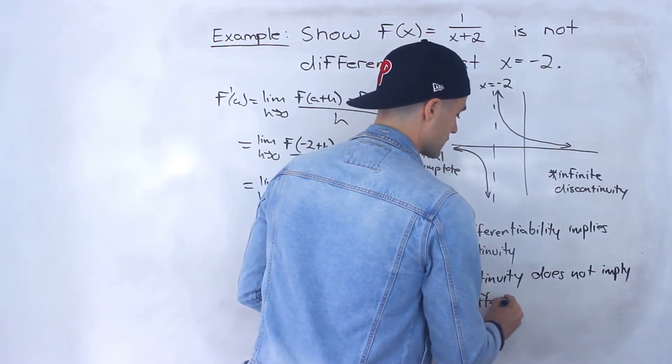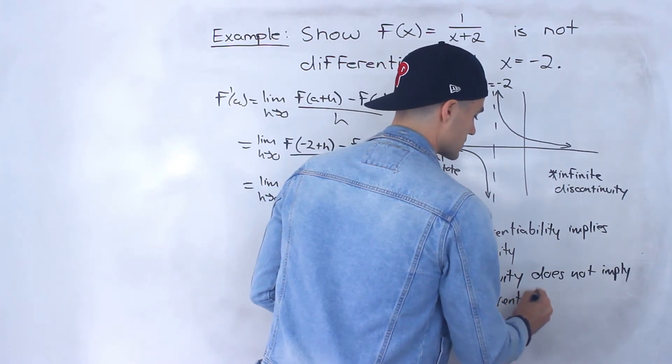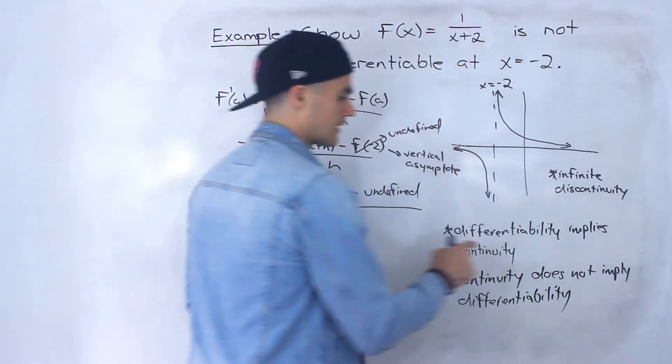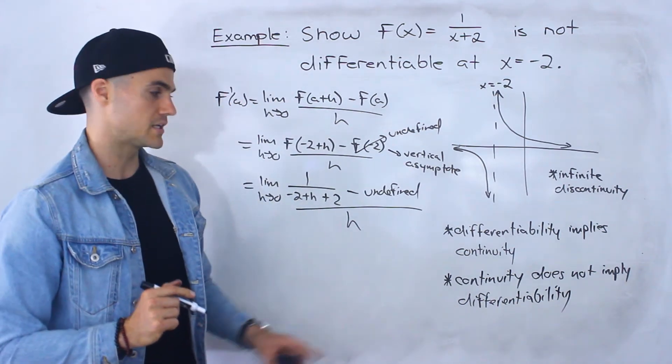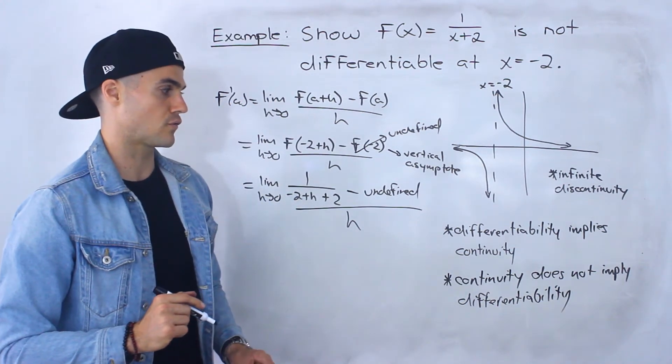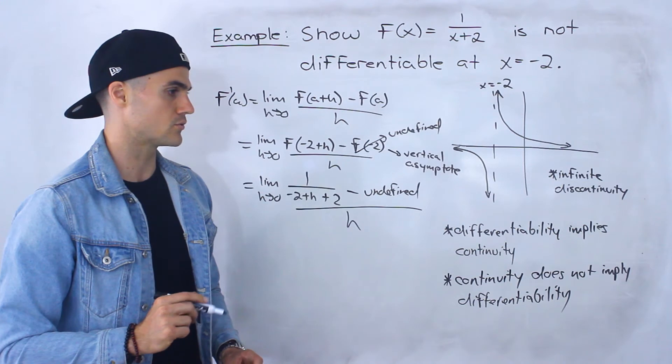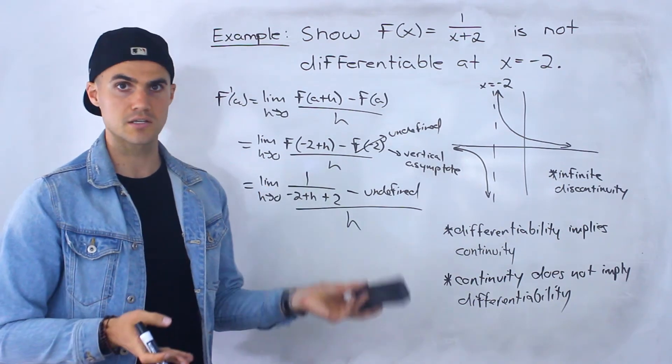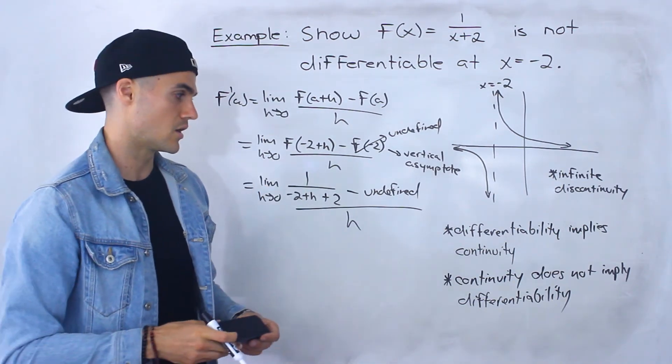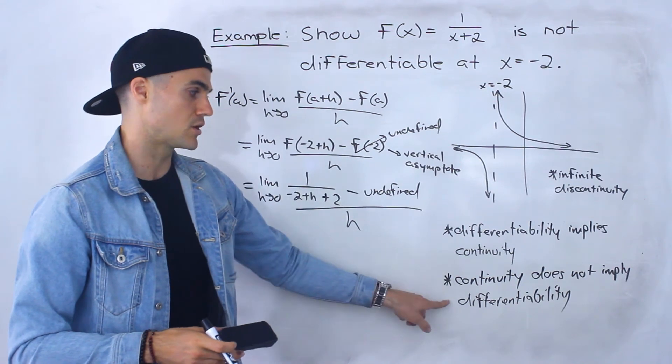So just because a function is continuous, it doesn't mean it's going to be differentiable. And we did a bunch of cases with that so far. We showed that with corners, cusps, vertical tangents, right? Functions that were continuous but not differentiable.